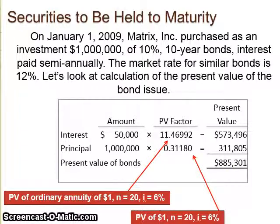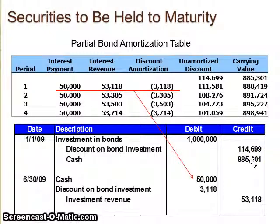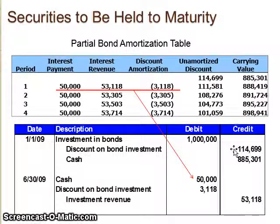That $885,301 is an important number, because that's the amount of cash we're paying out for that bond. So we credit cash for $885,301 because we're buying the bond. We record the bond for the full million dollars — investment in bonds is debited for $1,000,000. The offsetting piece is the discount of $114,699. That's how we record these to begin with, and let me put them in a T-account to illustrate where we're going.